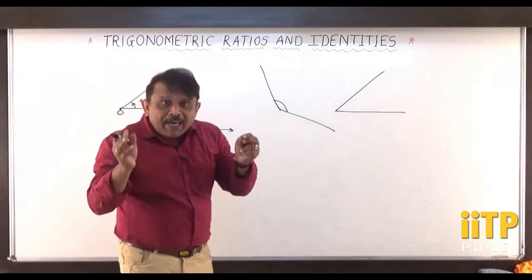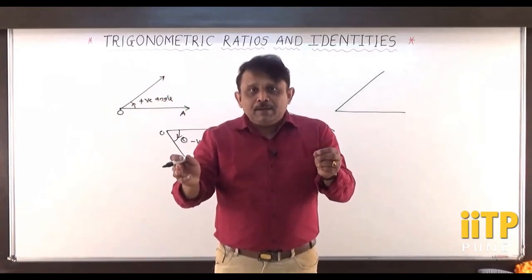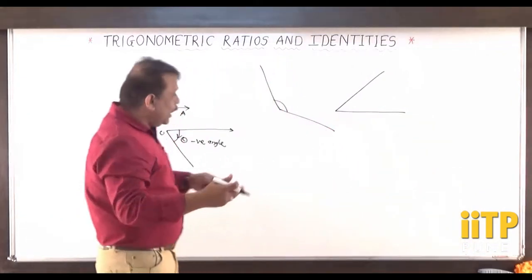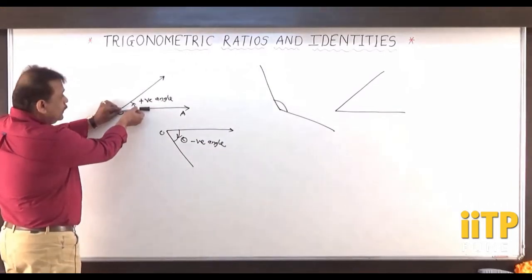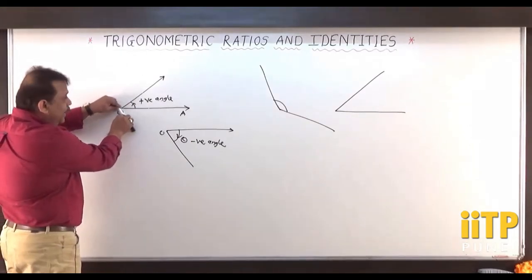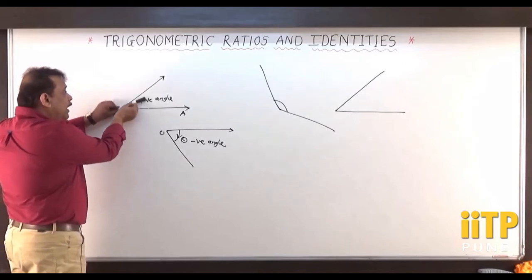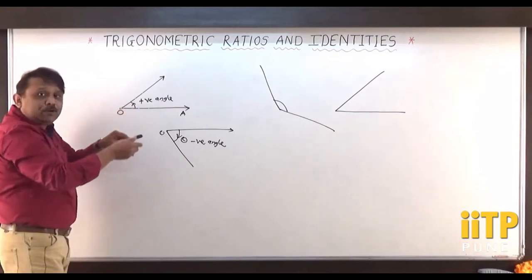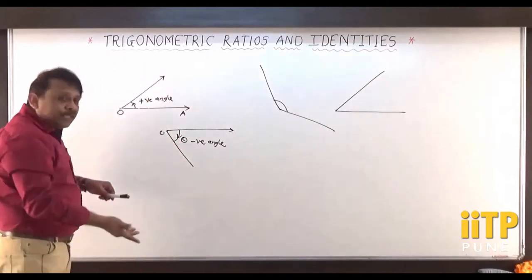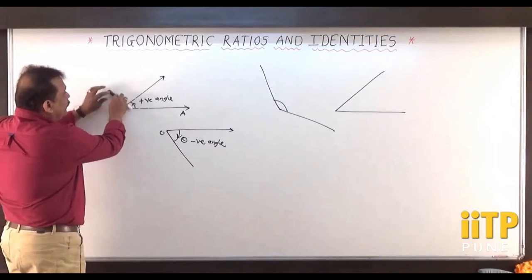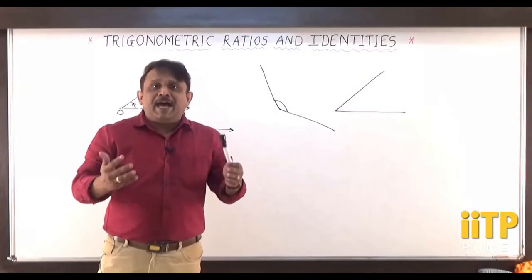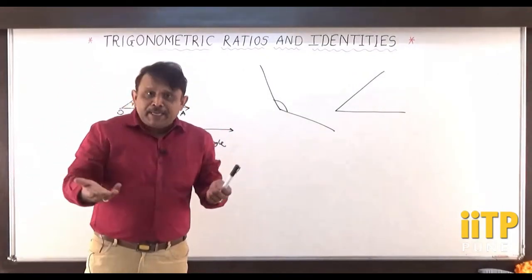Because of the rotation of this initial ray about O in either clockwise or anti-clockwise direction, I can rotate this ray multiple times to get different kinds of angles, even more than 360 degrees. For example, rotating anti-clockwise: 90°, 180°, 270°, 360°, then after a full rotation: 360°+90°, 360°+180°, 360°+270°, and so on. If I keep rotating, I get an angle of any measure.